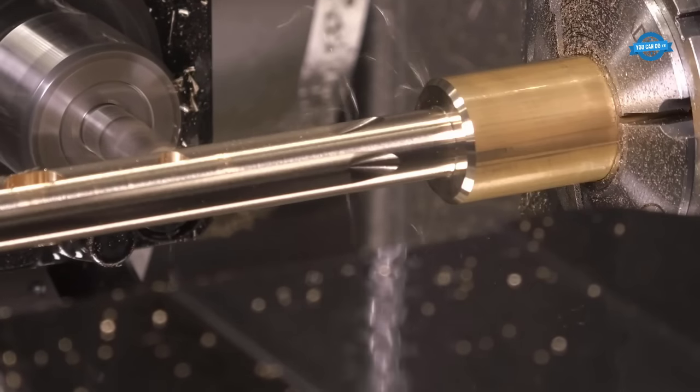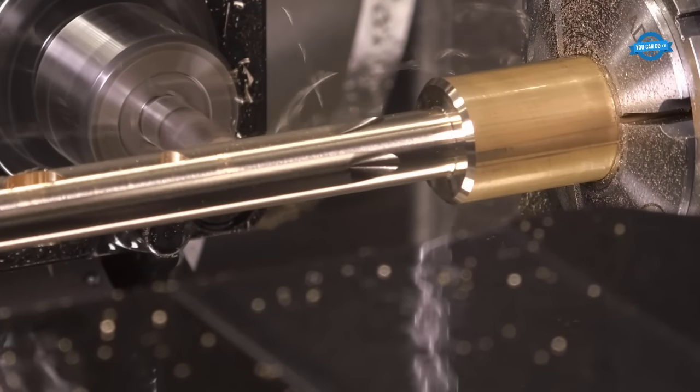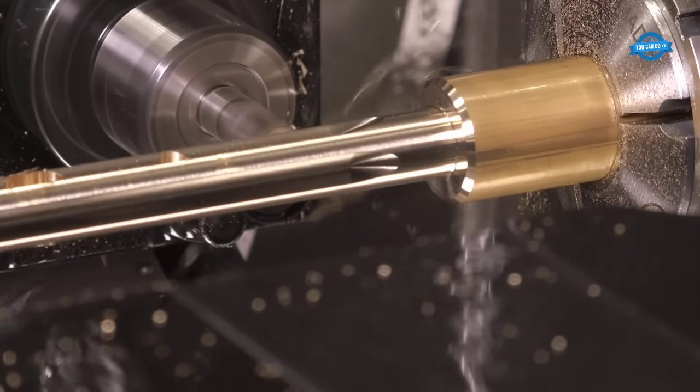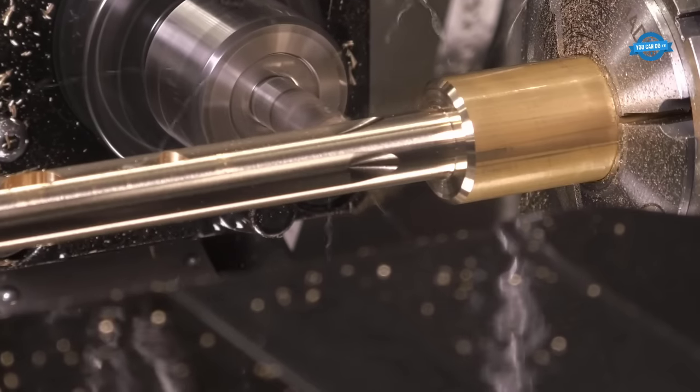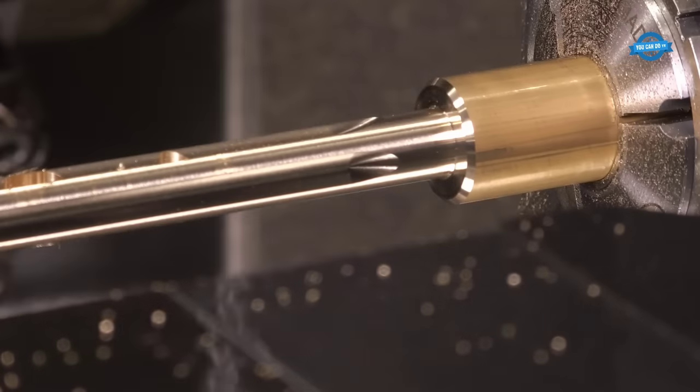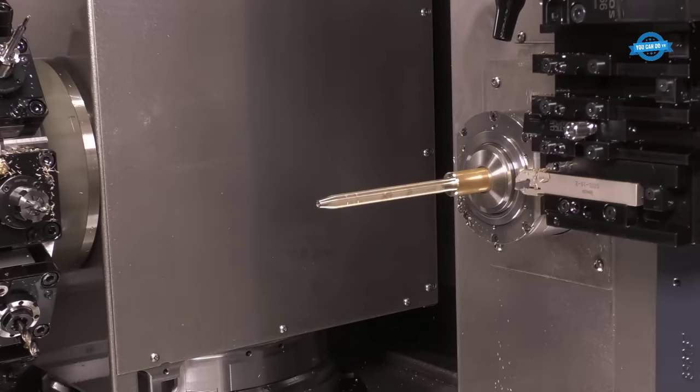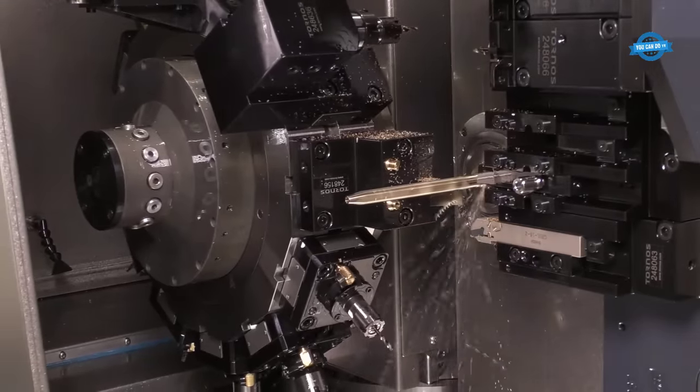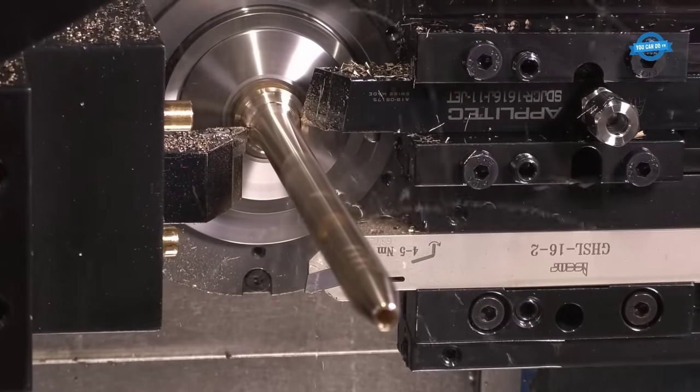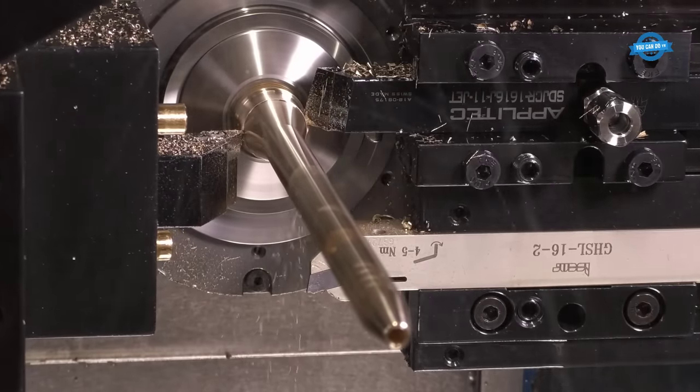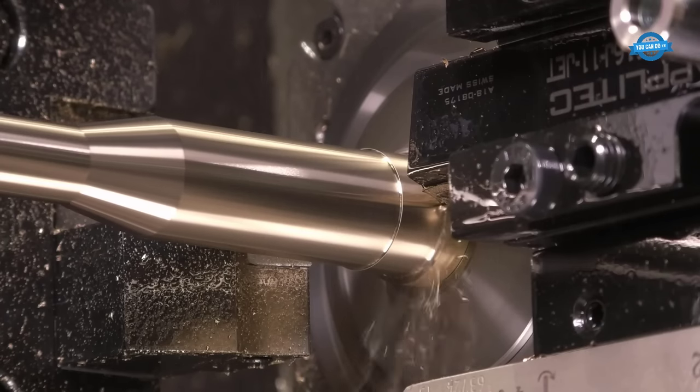To further extend the range of parts that can be machined, the Swiss Deco is also available in a 42mm option. In this configuration, the machine is equipped with a biconical collet that doubles the clamping force, offering even more machining versatility. Moreover, the machine can be adapted for F38 or F42 collets, providing additional options to suit specific machining requirements.